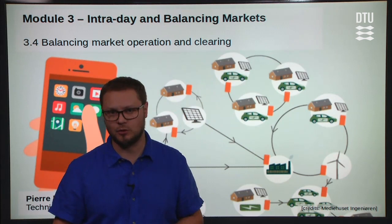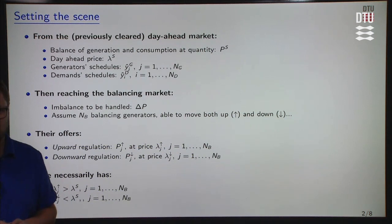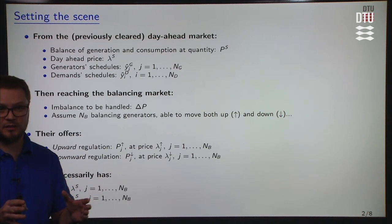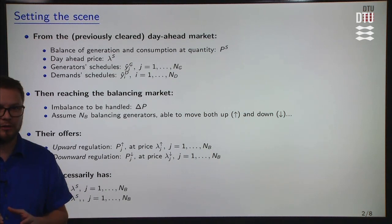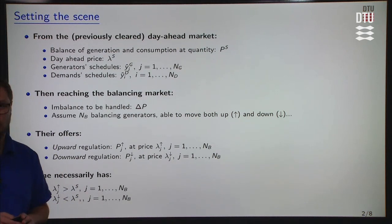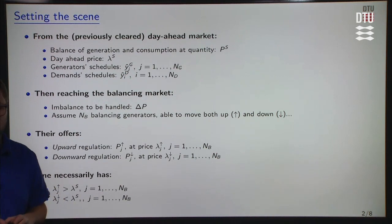First of all we need to set the scene looking back at the previously cleared day-ahead market. Remember that when we clear the day-ahead market it is cleared for an overall quantity to be consumed and to be generated — these two are equal and here we denote it P_s. There is a day-ahead price lambda_s which is the price at the equilibrium point. Then for each of the generators there is a scheduled generation quantity, denoted y-hat_g_j, and similarly on the demand side there are scheduled quantities for consumption, denoted y-hat_i_d.